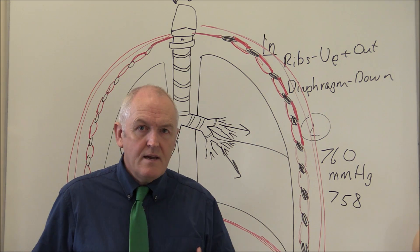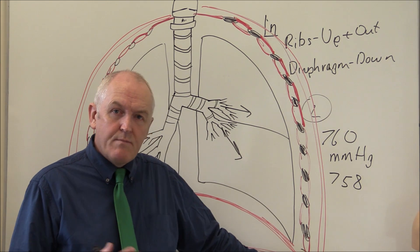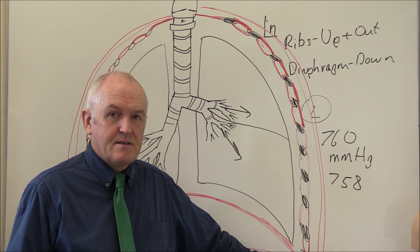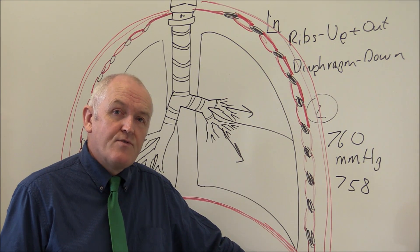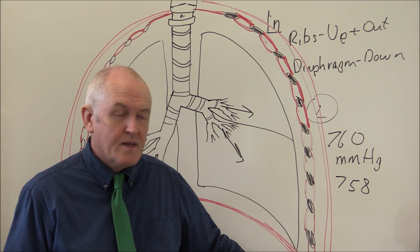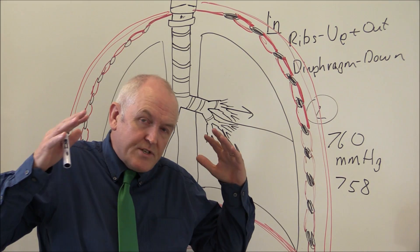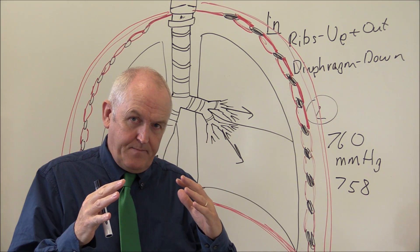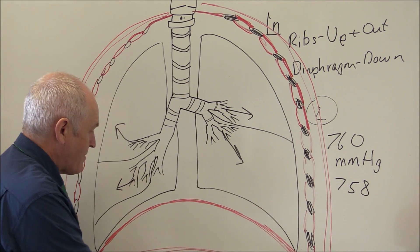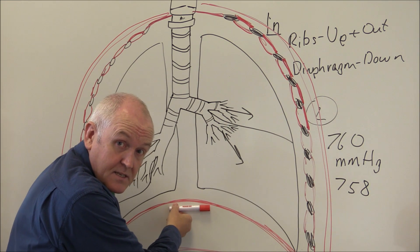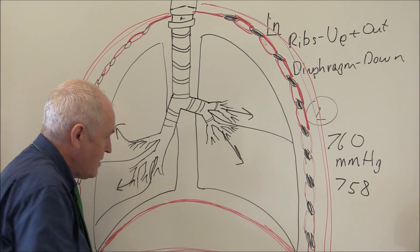So we've breathed in. The next thing is to breathe out. When you're relatively relaxed and not exercising, expiration is just a passive recoil process. The external intercostal muscles relax, allowing the chest wall to fall down and in. When the diaphragm relaxes, it goes up — the diaphragm is down when contracted and up when relaxed.